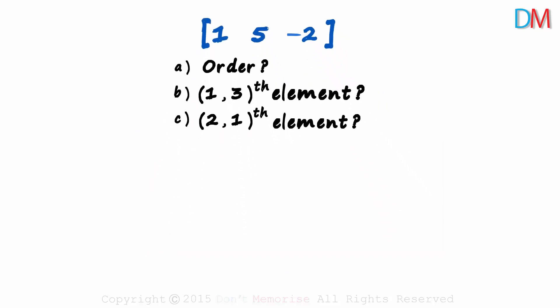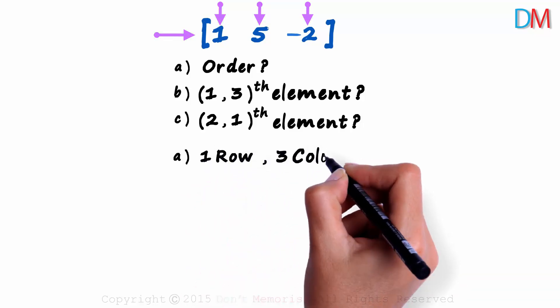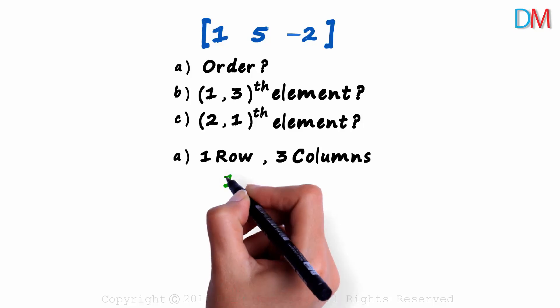Okay, let's zoom out and try answering the first question. Look at the matrix. It has one row and three columns. One row and three columns. The order of the matrix will be 1 by 3.